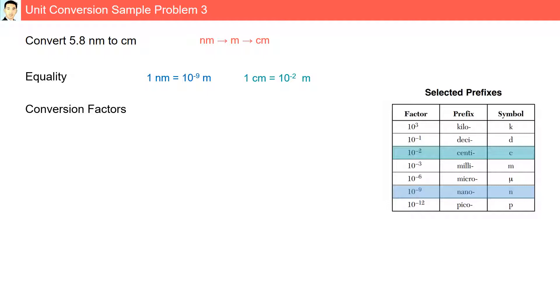We can write our conversion factors using the note that whatever we are trying to achieve should be at the top. Here we are going from nanometers to meters, so we are going to write meters at the top. And next we are going to go from meters to centimeters, so we write centimeters at the top for that conversion factor.